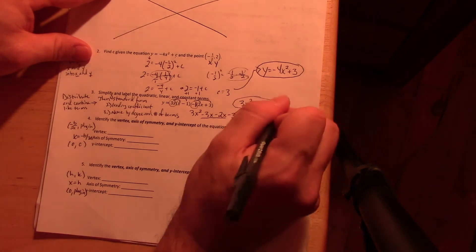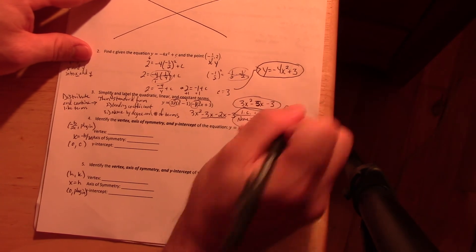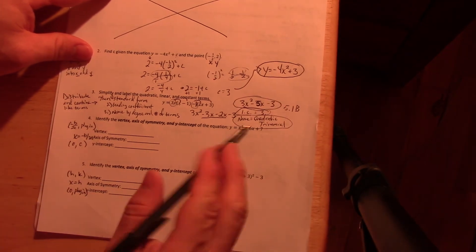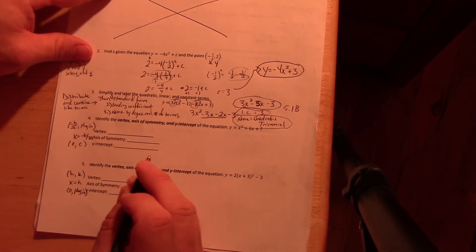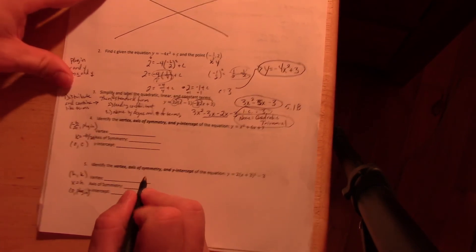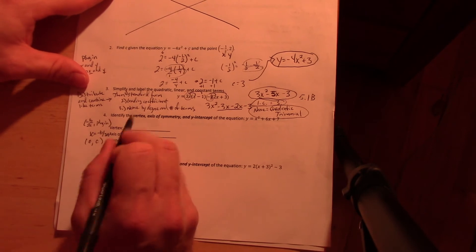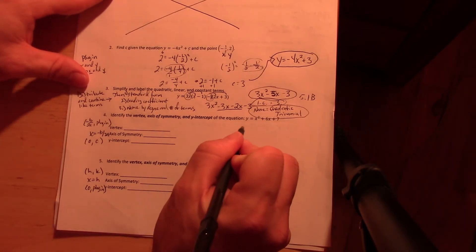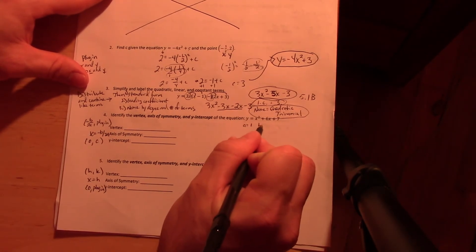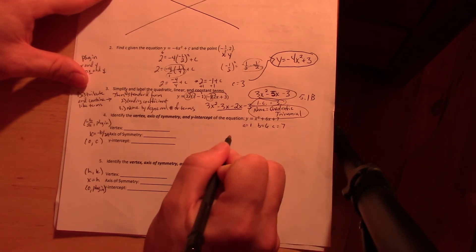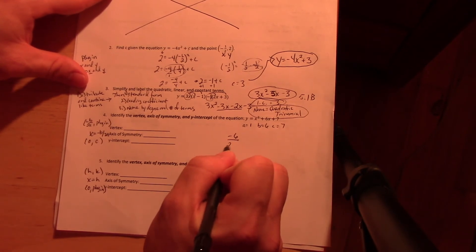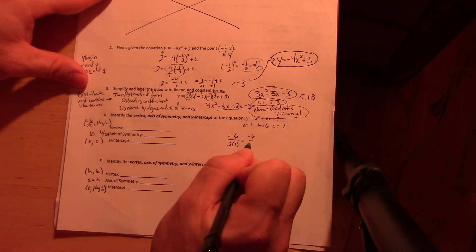This is from 5.1B if you need to go back and look at those notes on naming them by degree and by number of terms. For number four, the vertex is found by taking the opposite of B over 2A. So in this problem, A is 1, B is 6, and C is 7. So I'm going to take the opposite of 6 over 2 times 1. Negative 6 divided by 2 is negative 3.